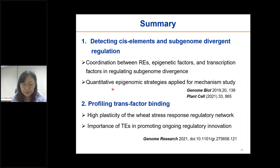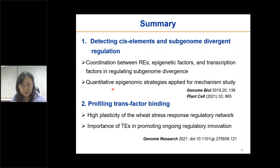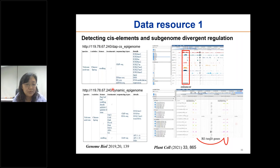I will summarize the major findings. For the first study, we observed the coordination between regulatory elements, epigenetic factors, and transcription factors in regulating subgenome divergence, indicating that quantitative epigenomic strategies could be applied for mechanism study in the extremely large wheat genomes. For the second study, we revealed the high plasticity of the wheat stress response regulatory elements, as well as the importance of TEs in promoting ongoing regulatory innovation.